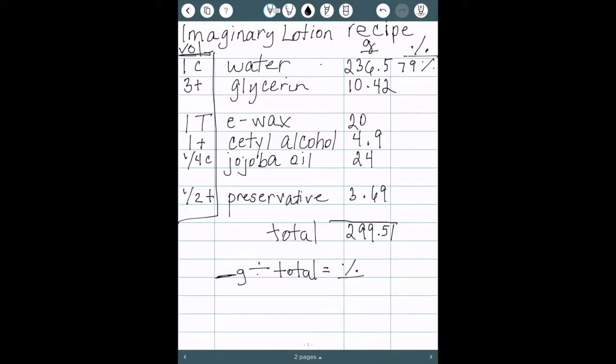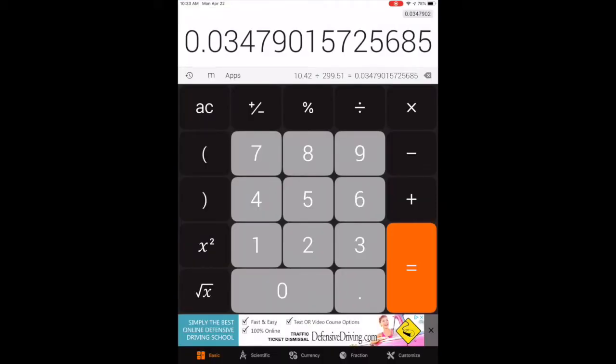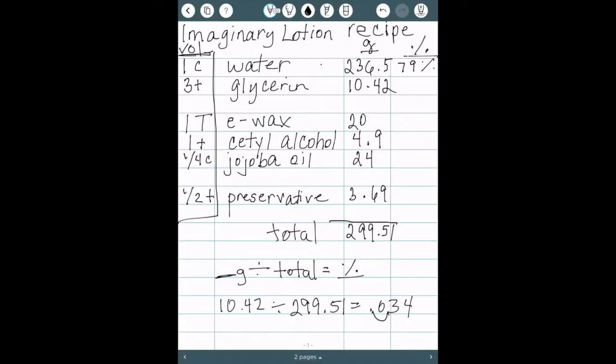So let's do the next one, walking through it one more time. We know our glycerin is 10.42 grams. So that is 10.42 divided by our total 299.51 and that equals 0.034. Move your decimal over two places and your glycerin is 3.4 percent. So pretty simple.